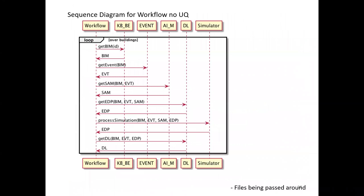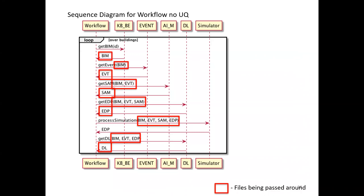This is the sequence diagram for running the workflow. We start by getting the buildings, then get the event, then get the structural analysis model, get the engineering demand parameters, perform the simulations, and then get damage and loss estimation. All the red boxes are files being passed around between programs — this is what's handled internally when we run our simulation.